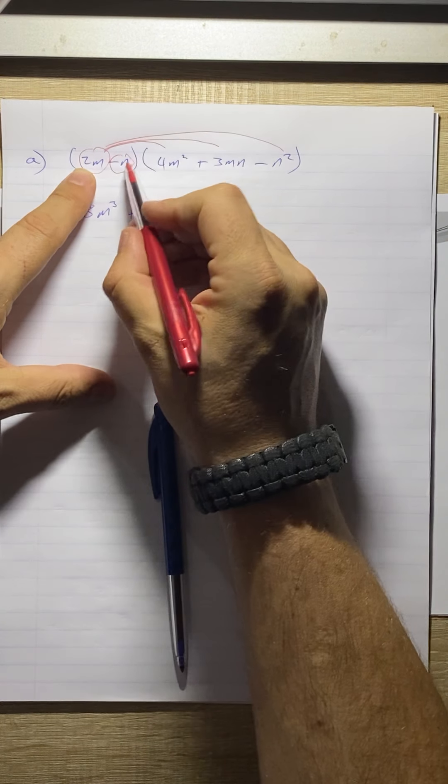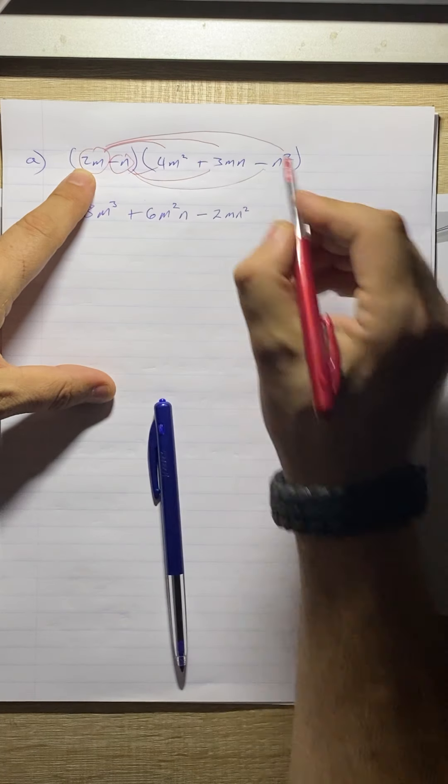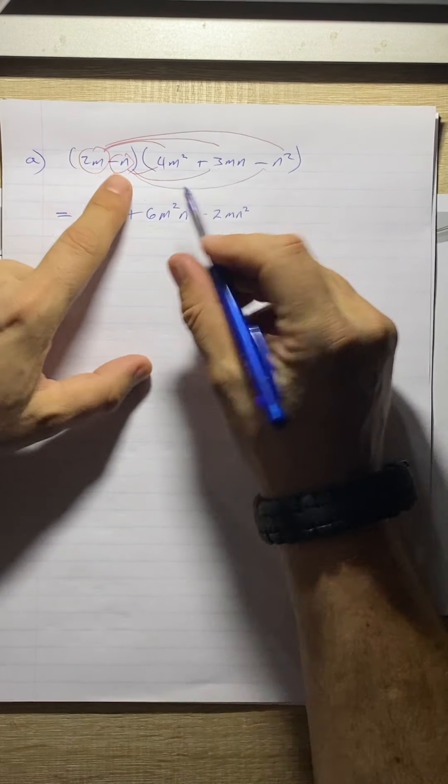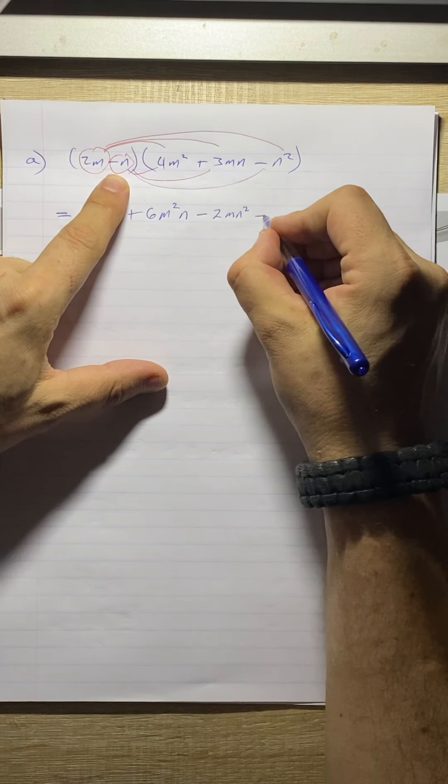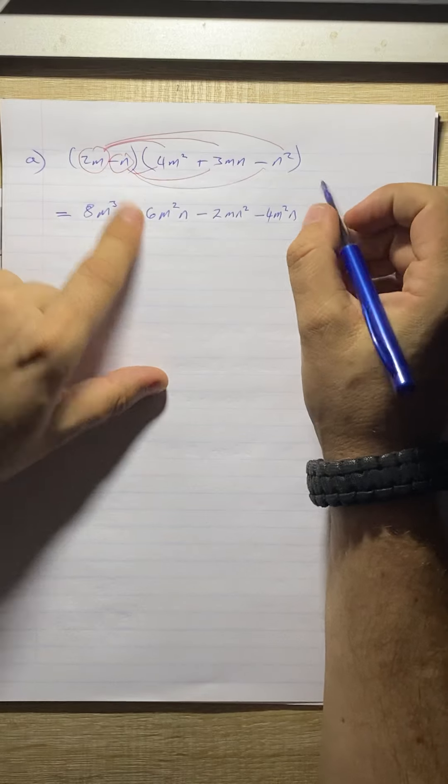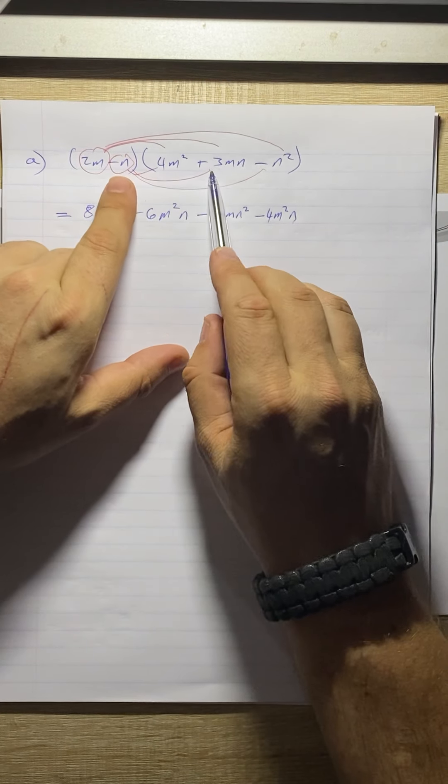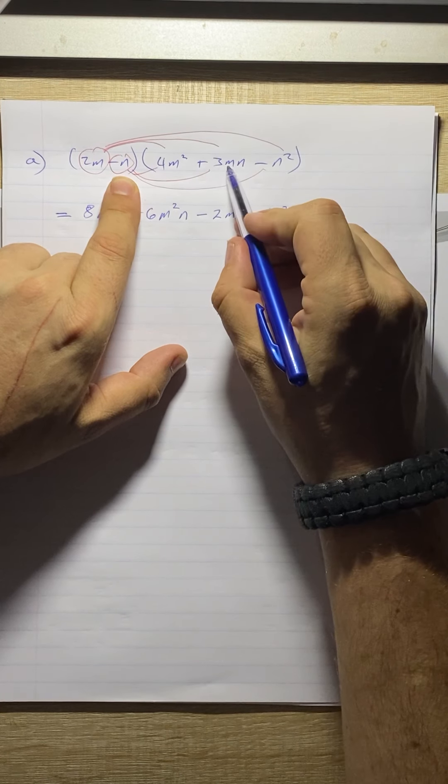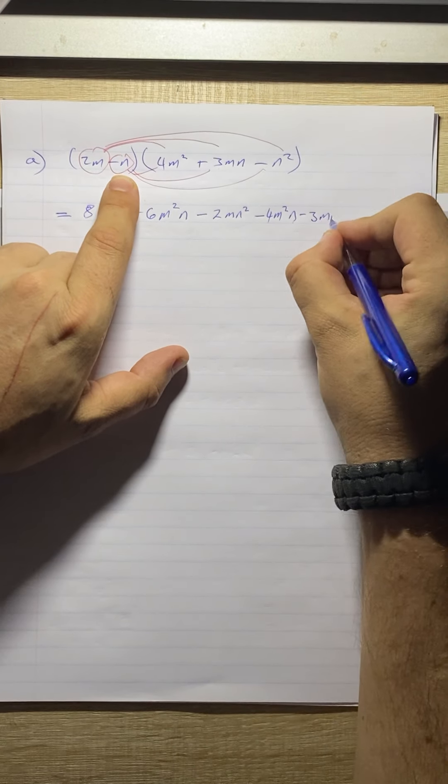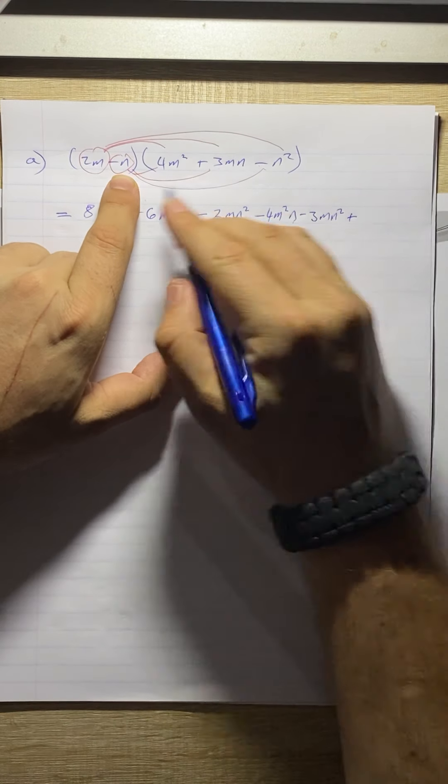Now what we need to do is now we need to distribute that second one into each term in that bracket there. So the first one will give us minus 4m squared n. And remember, grade 10s, try and keep these things in alphabetical order. The next one will give us minus 3mn squared. And then the last one will give us plus n cubed.